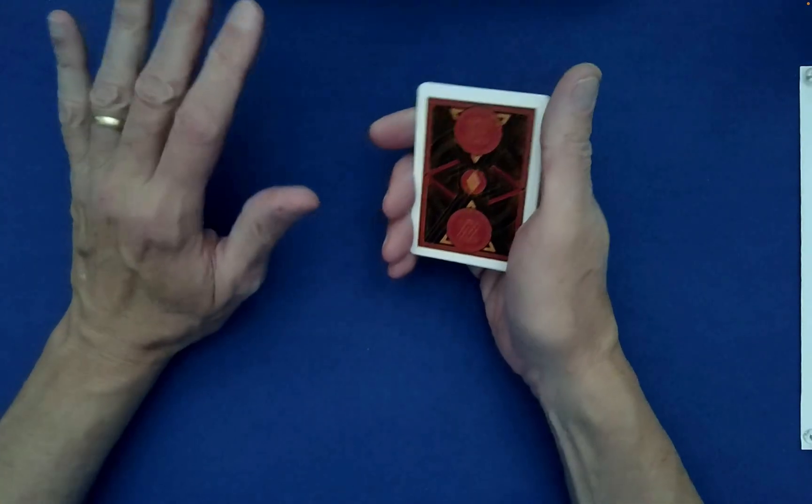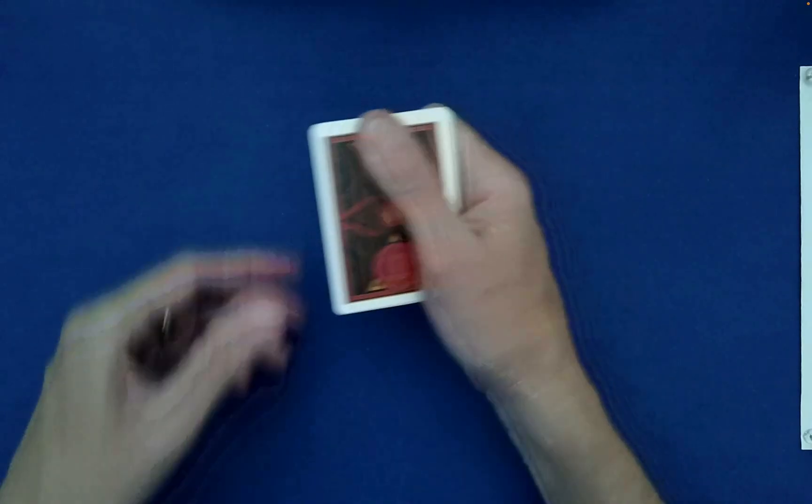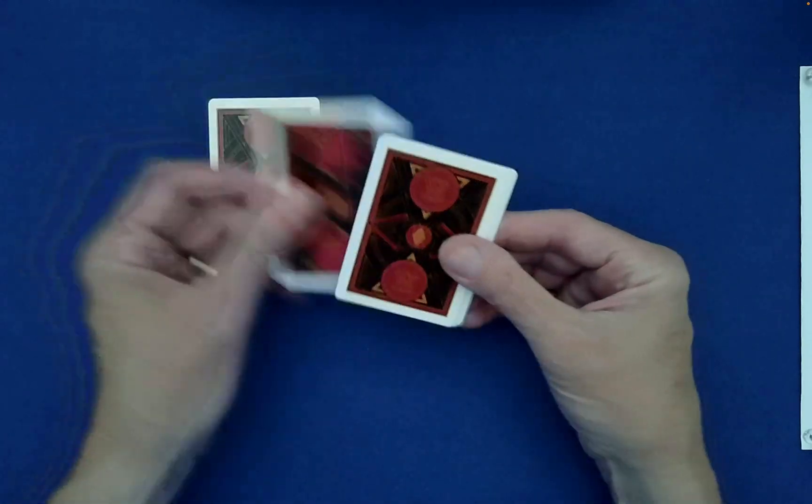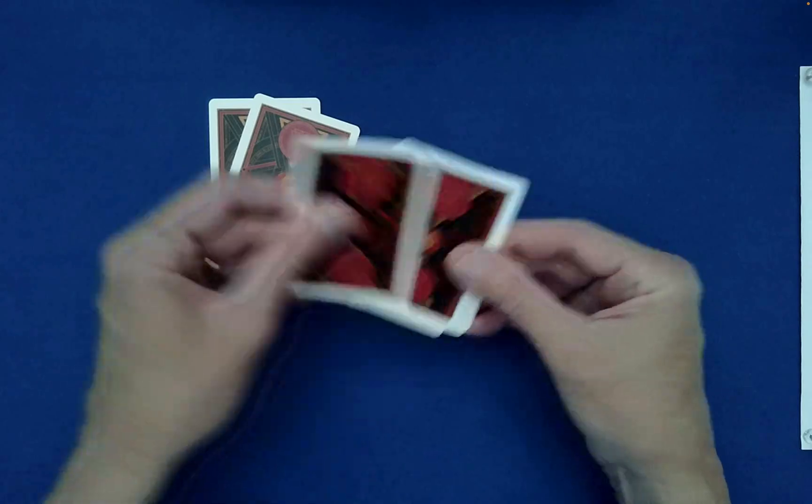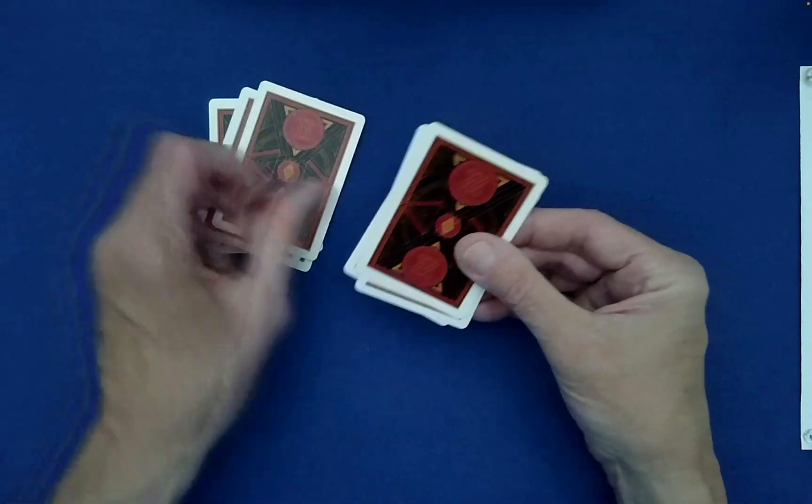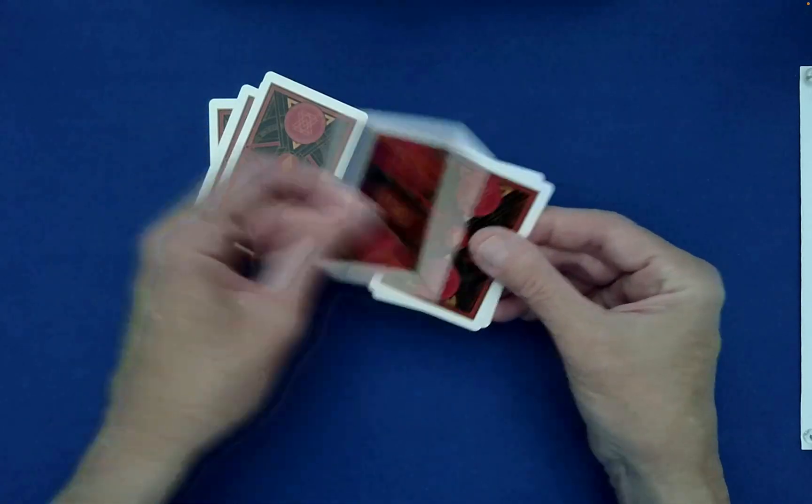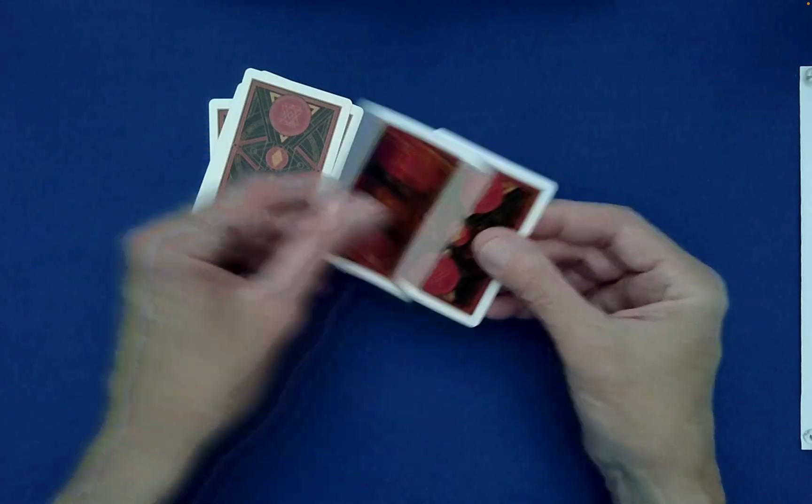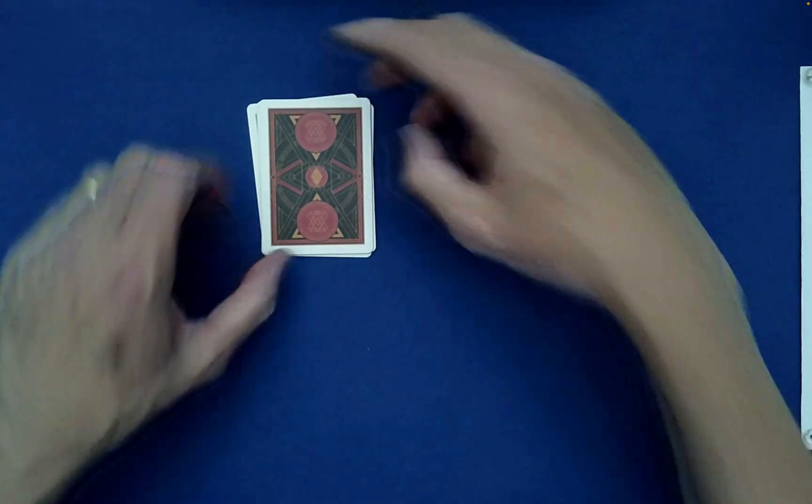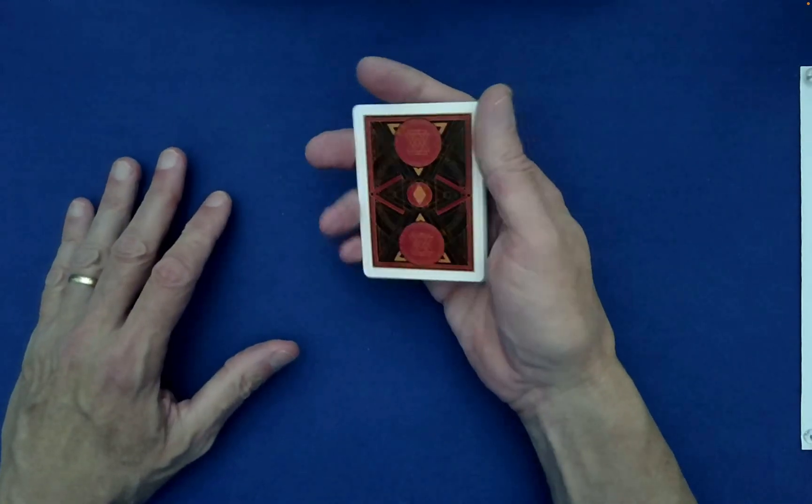Now from here, why don't we do a down-under? Have you seen that before? The Australian down-under, down-under, down-under, and last one goes on top. Very fun shuffle to actually perform.